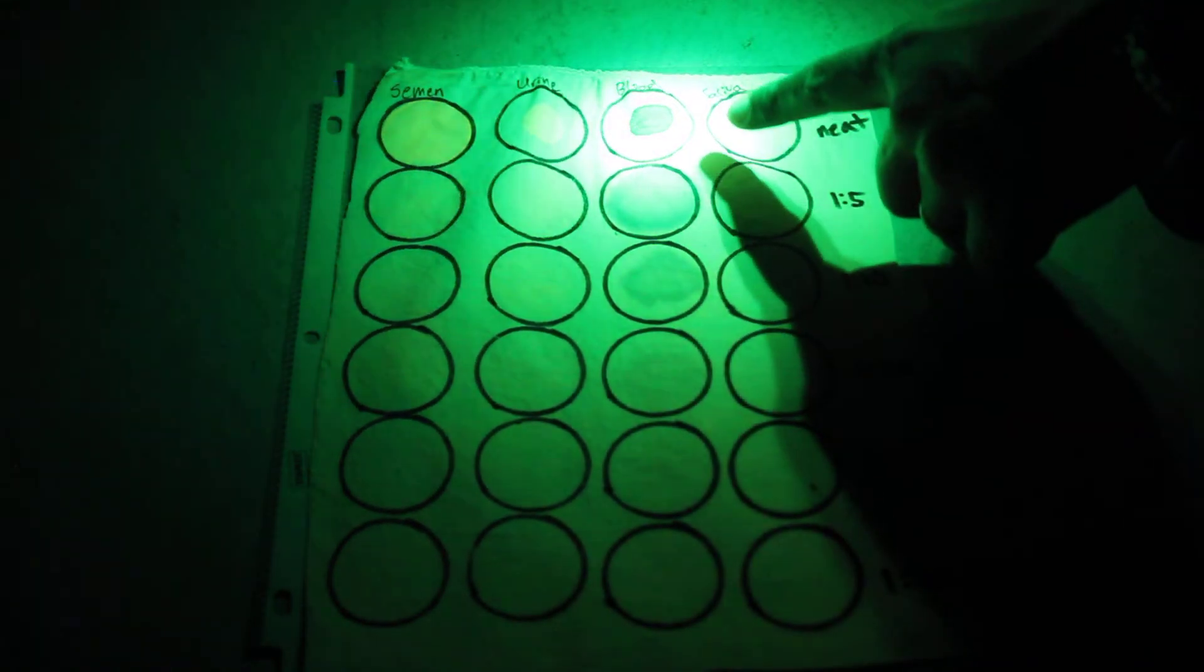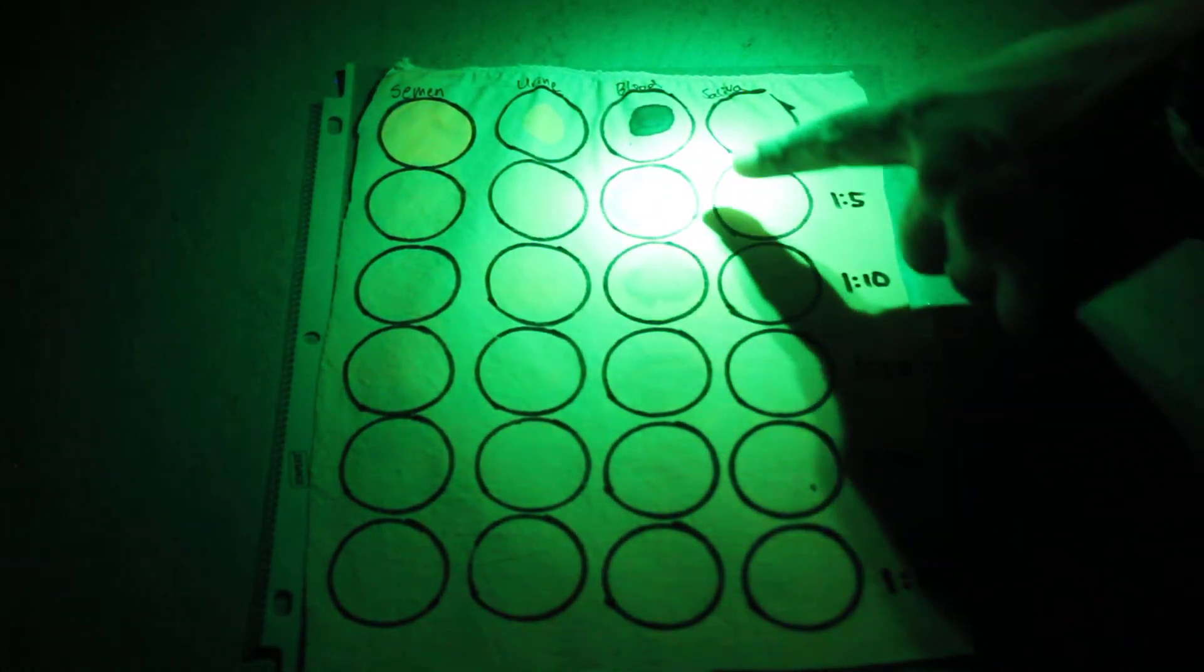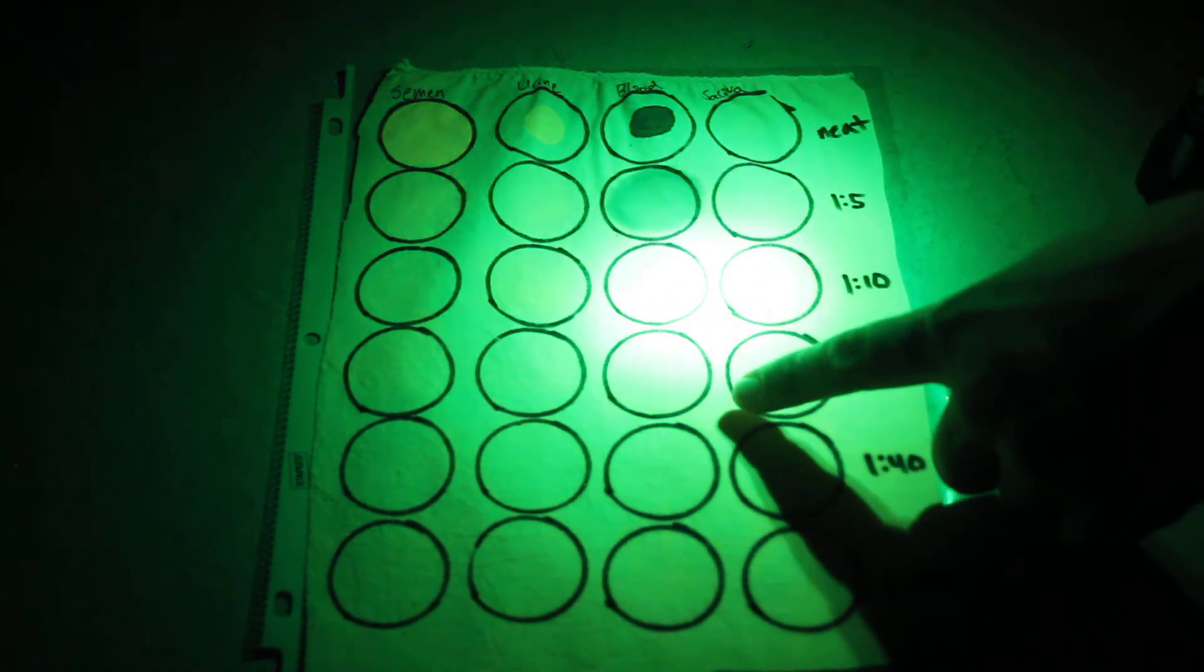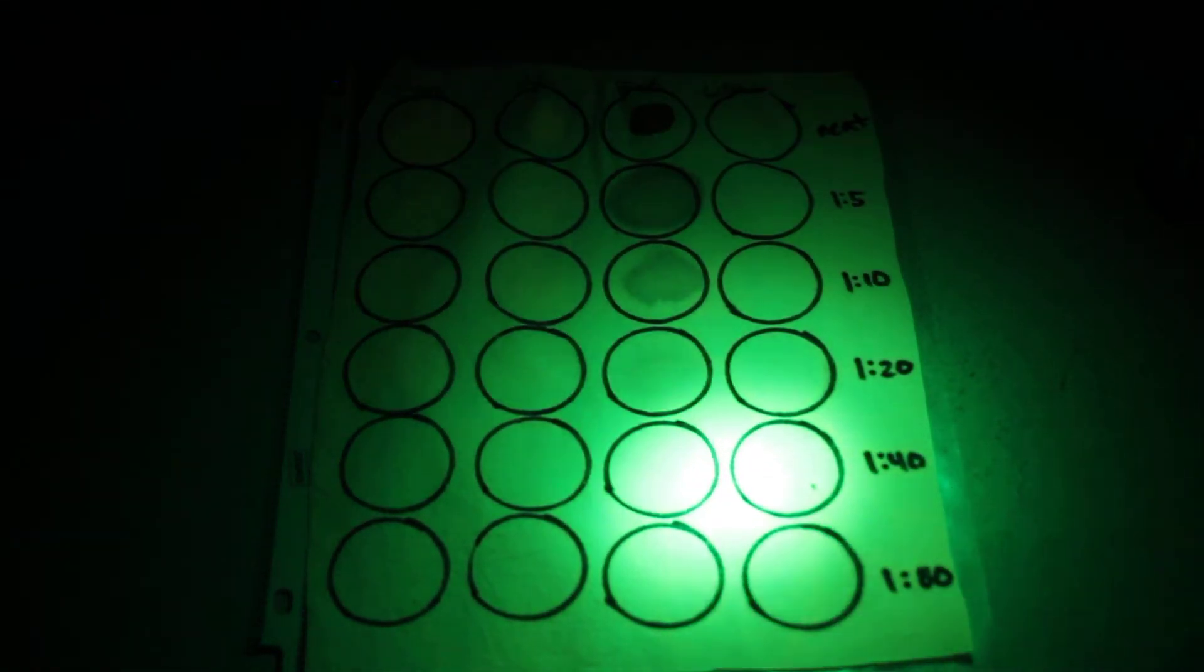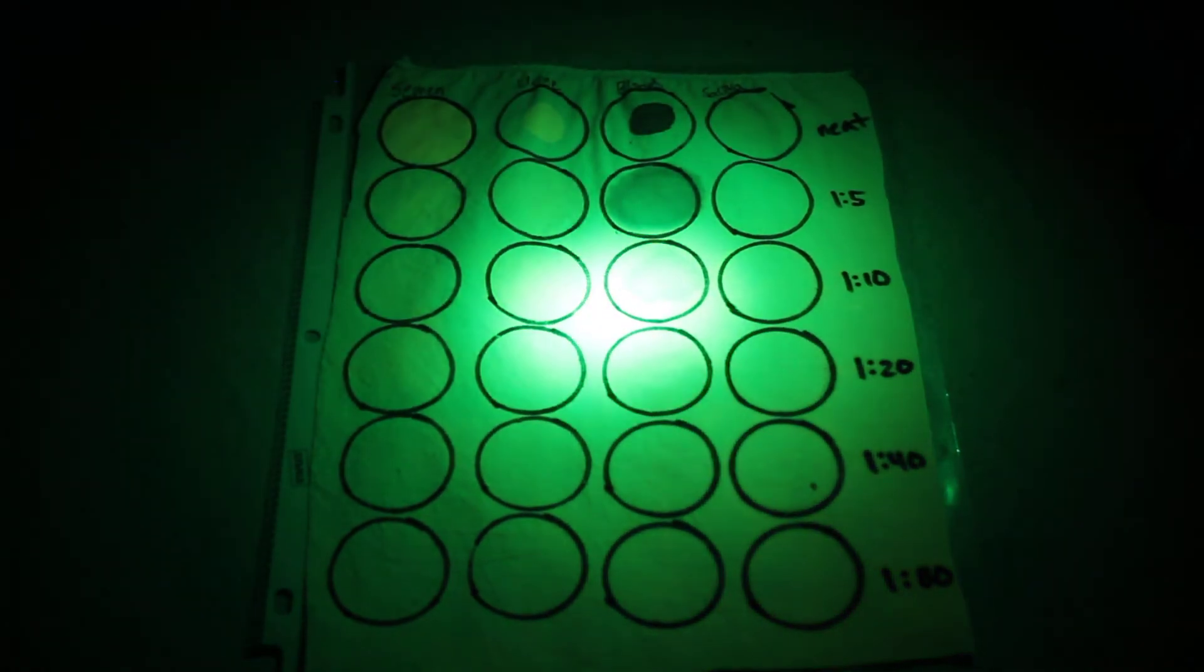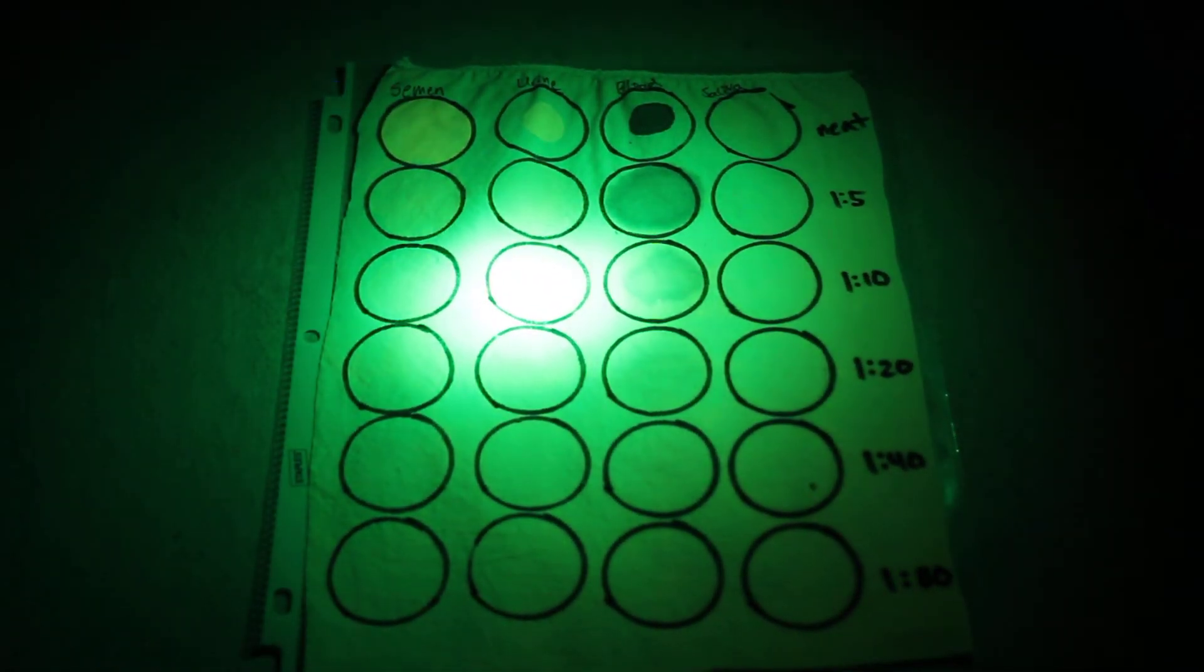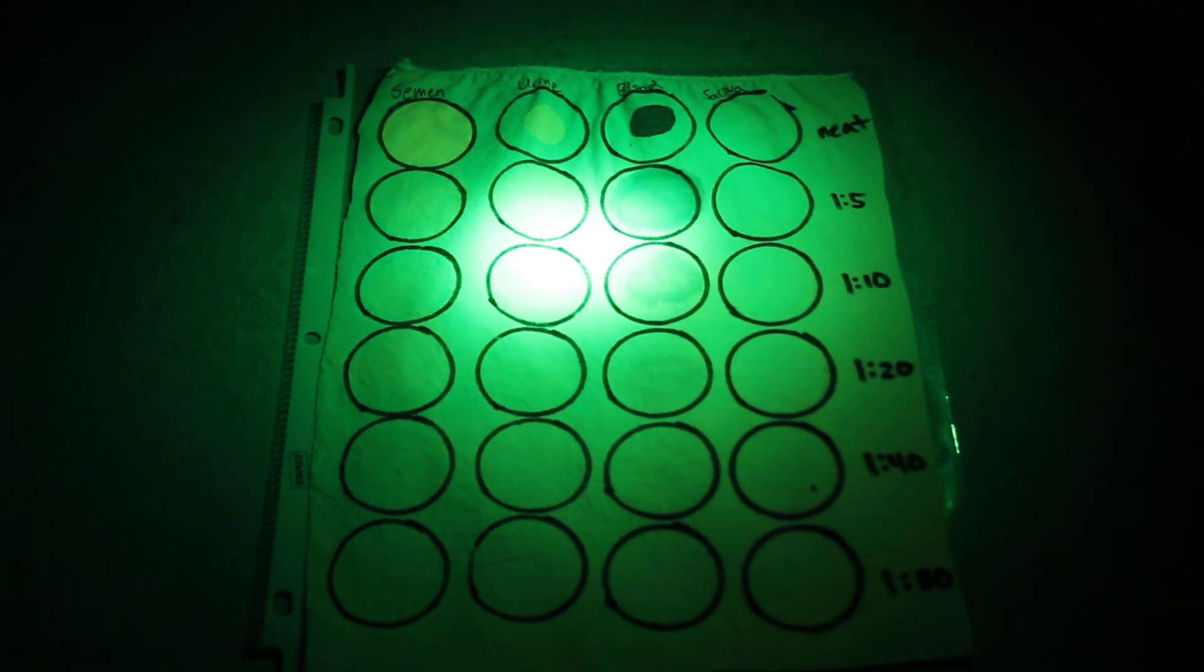Then back up to blood and saliva. As we go down, you can still see it pretty well, pretty well. And then it gets really hard to see. This is 1:40 and 1:80. But in any event, that's how we use blue light when it's dark, and with the right filter to see forensic evidence. Thanks.